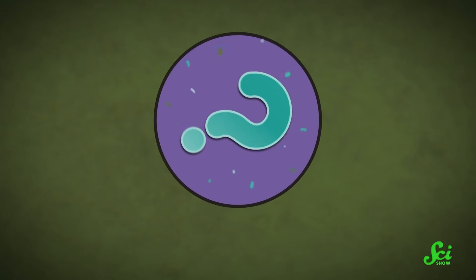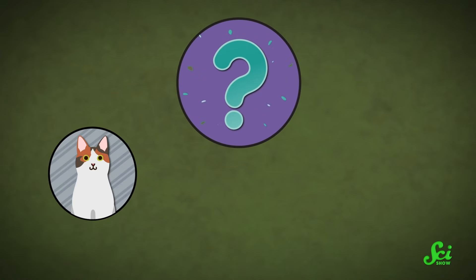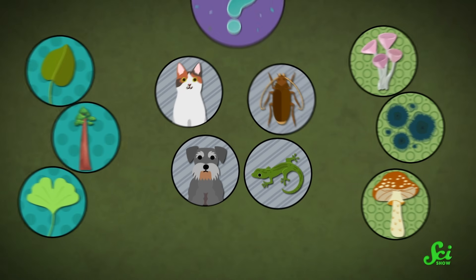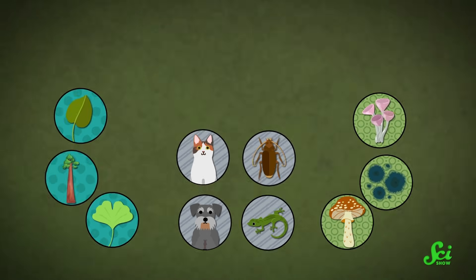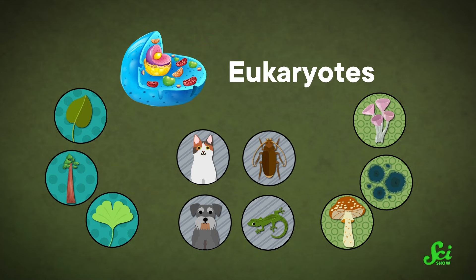If I asked you what is an animal, you might start by saying it's something like a cat, or a dog, or a lizard, or a bug. If I asked you to be more specific, you might come around to saying it's one of the major groups of organisms whose cells have a nucleus and organelles with membranes, along with plants and fungi. And that's where it gets interesting, because those old groups — the kingdoms of eukaryotes, or nucleus havers — are basically obsolete.